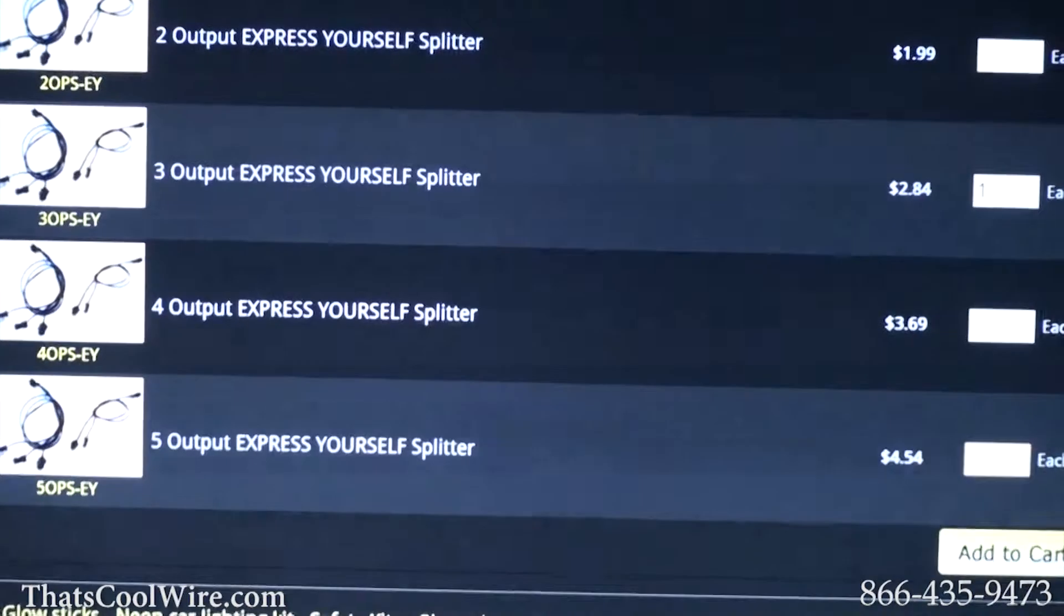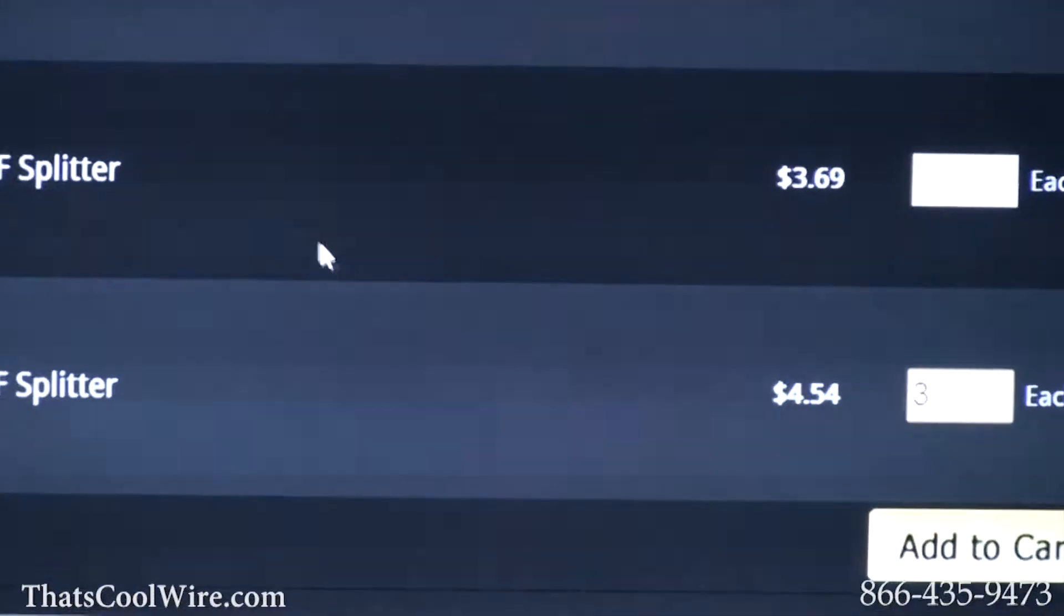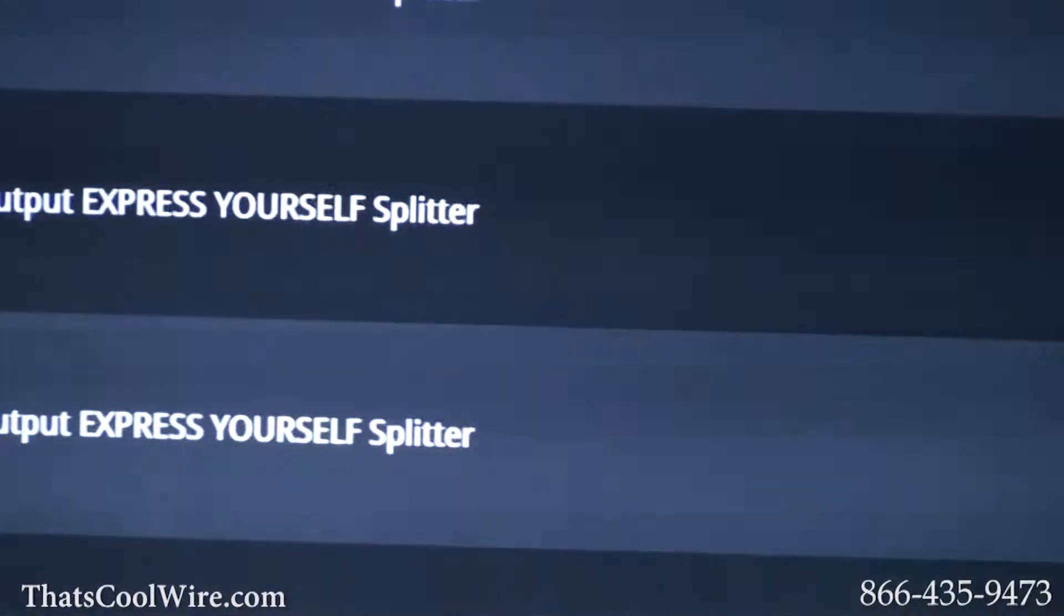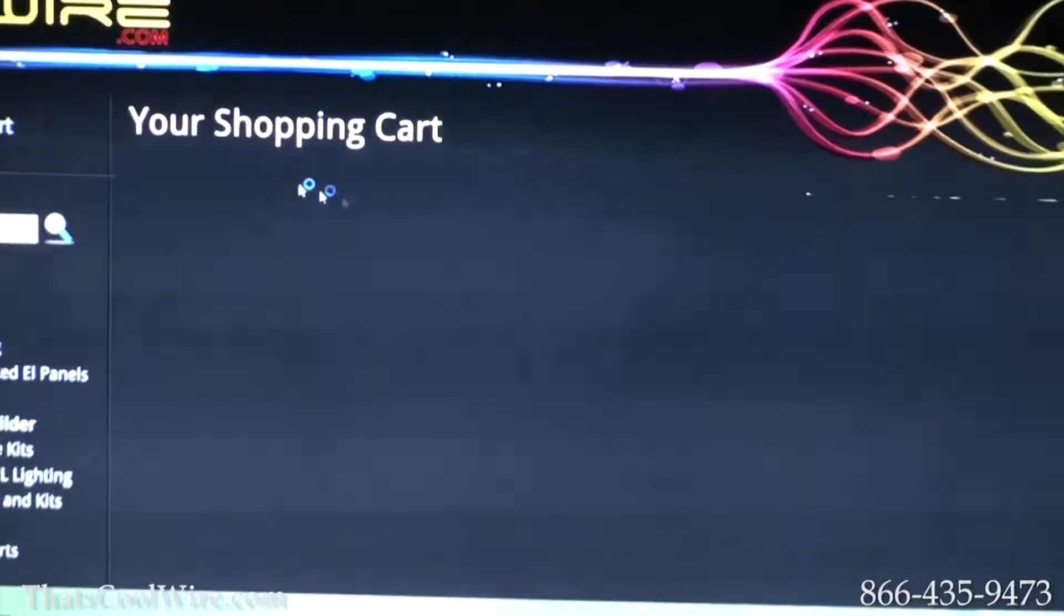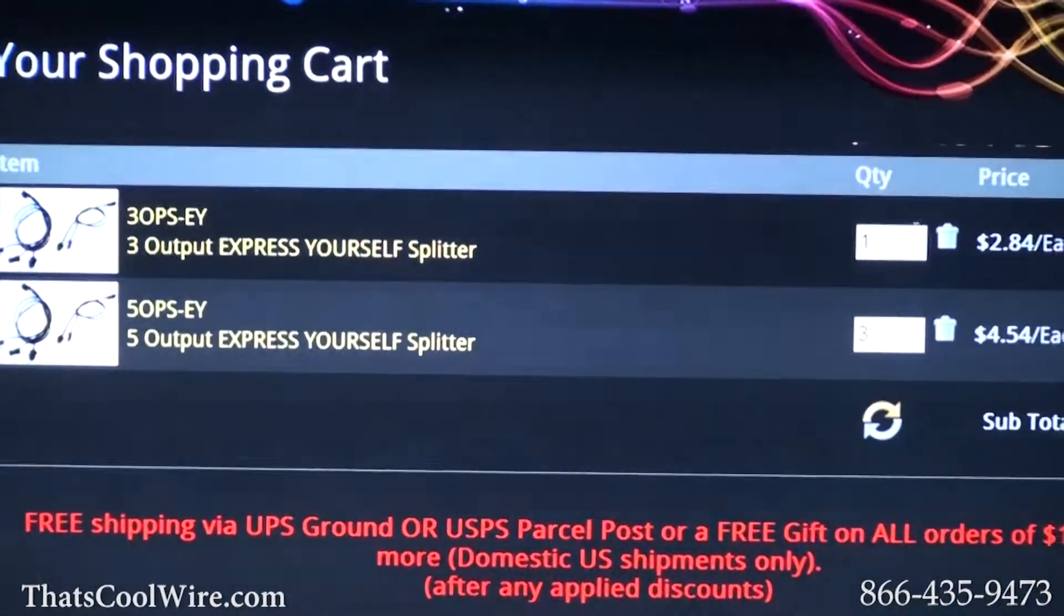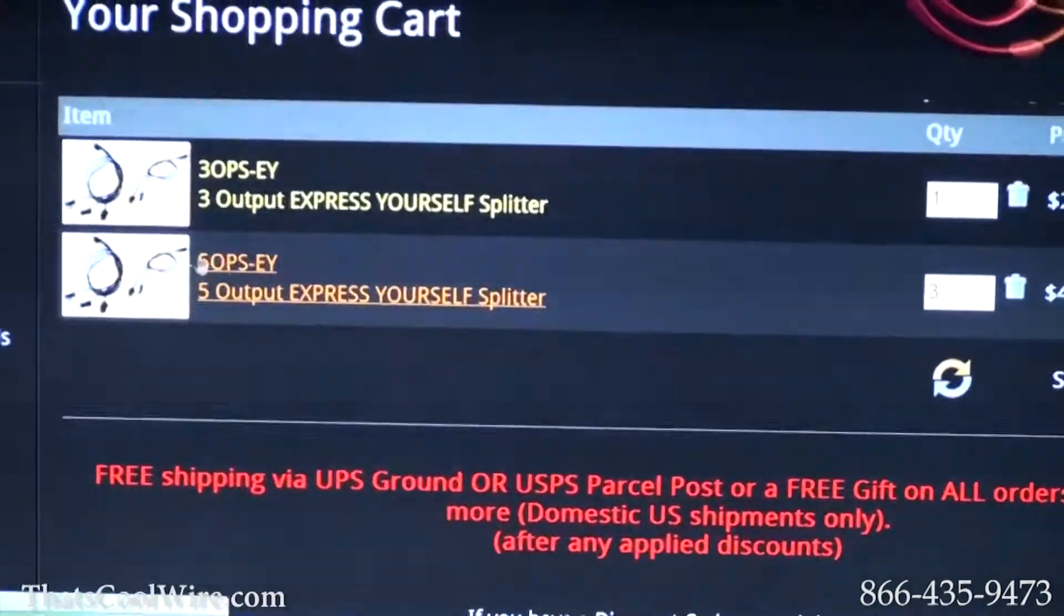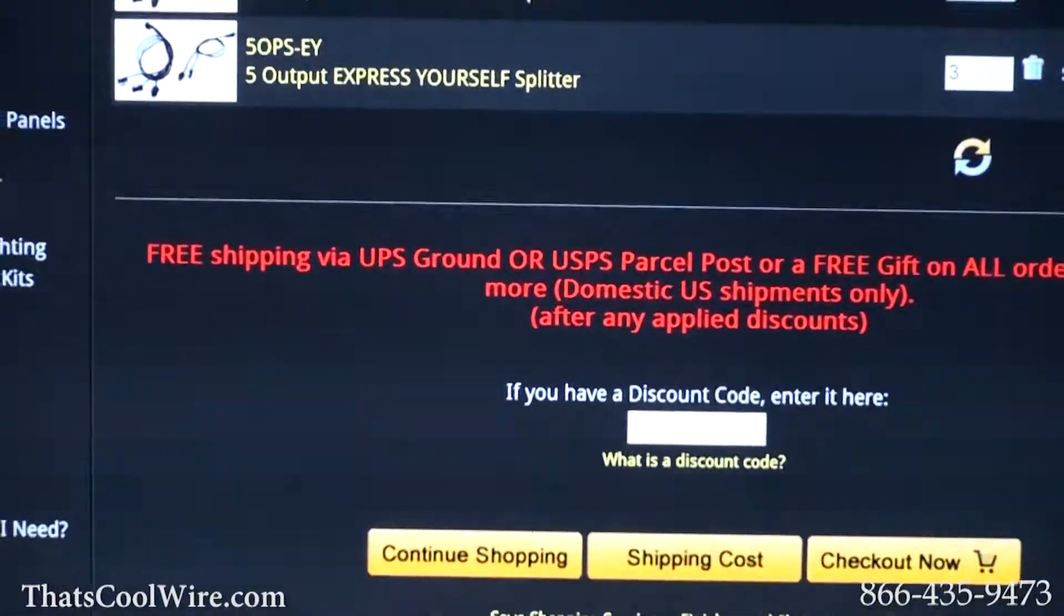So that will give you a 15 output. So you would just select three, and then if you say add to cart, you can see it right here: you have your one three output splitter and your three five output splitters. And all we did again was we went to EL Flat Panels.